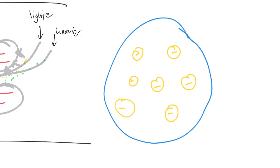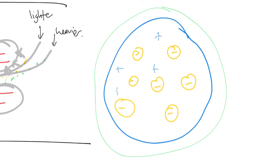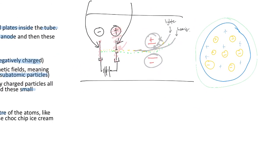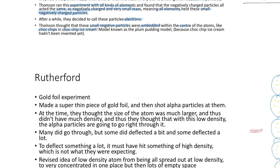This entire thing is the atom, and within that atom are the little bits of negative charge. Everything else in that atom is positively charged — they didn't know what it was yet, but they knew it had to be positively charged to balance it out and make it neutral.